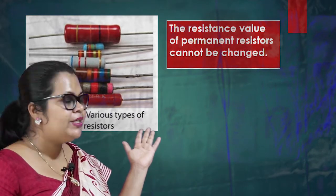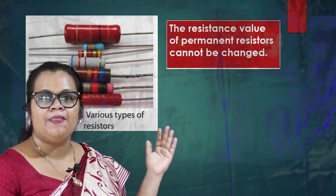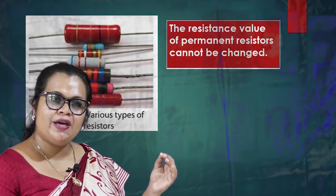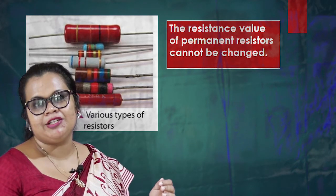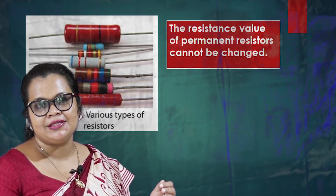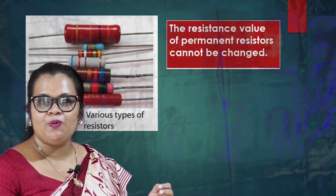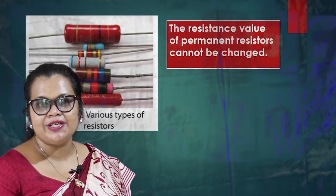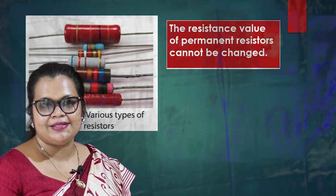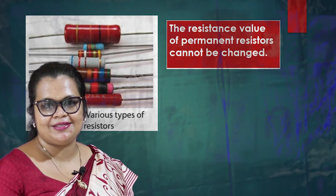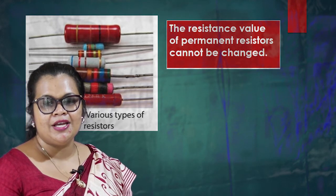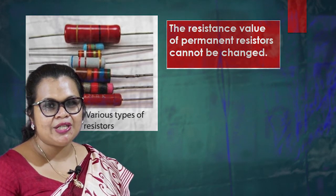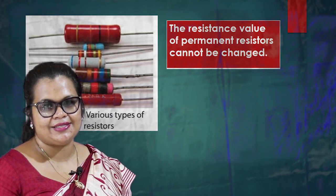There are different types of resistors. There are permanent resistors, light sensitive resistors, and variable resistors. We can change the resistance value of variable resistors. Now you can see an activity to confirm the action of resistors.